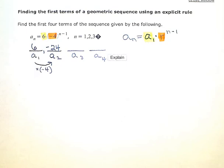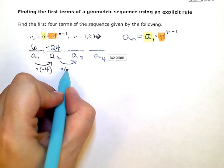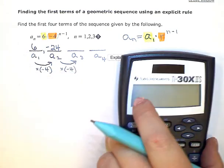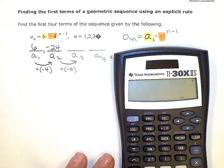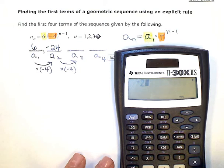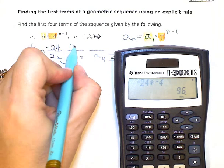I need to multiply by negative 4 again to get my third term. Negative 24 times negative 4 gives me positive 96 for my third term.